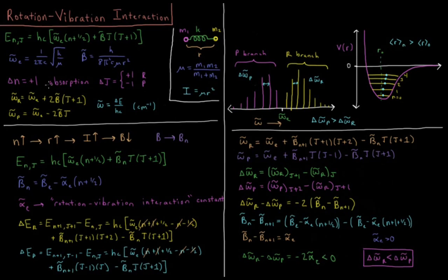Our selection rules for the ro-vibrational spectrum was that delta n equals plus one. It's an absorption. We're absorbing a photon with some amount of energy equal to our energy jump. And delta j equals plus or minus one. Plus one is more energy going up to the R branch. Minus one is less energy going down to the P branch.